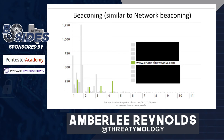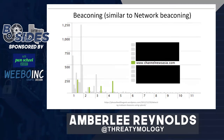Similar to beaconing with network traffic, you can also look for beaconing in HTTP traffic, which may indicate exfiltration or a malware infection. The same criteria apply: similarly sized packets, packets sent consistently with little variance, or a high number of packets sent to the same place. This example shows packets sent exactly one second apart all to the same website — it may indicate something is going on, or it may simply be a heartbeat, but it's definitely worth checking to make sure it's benign.